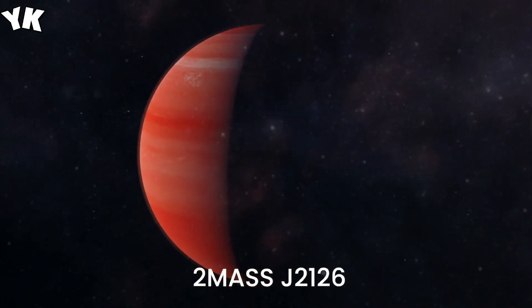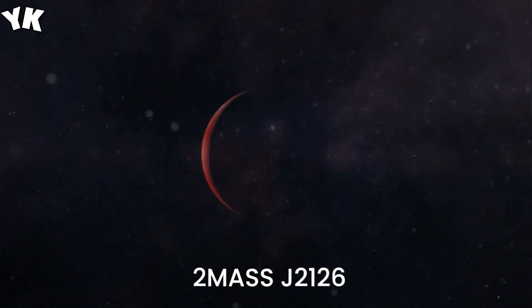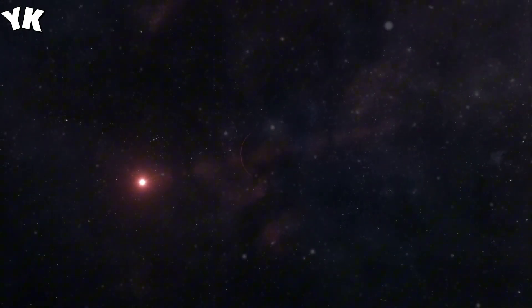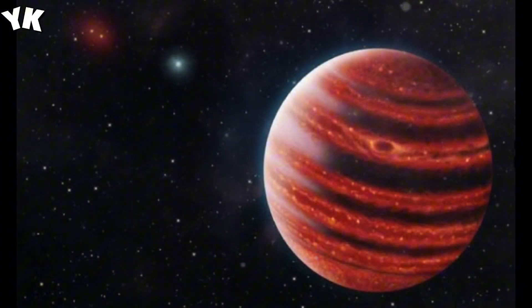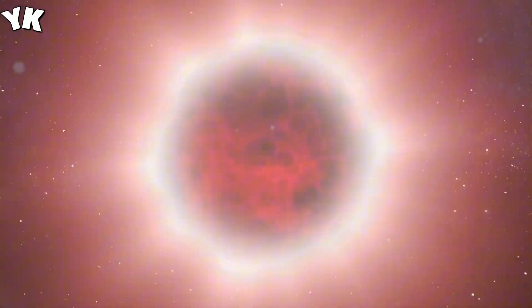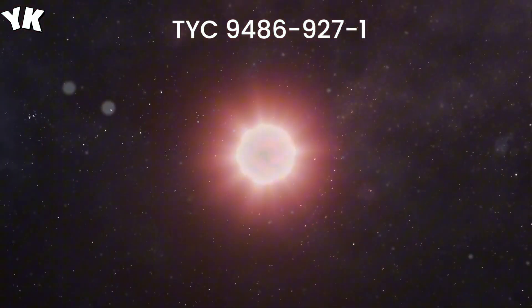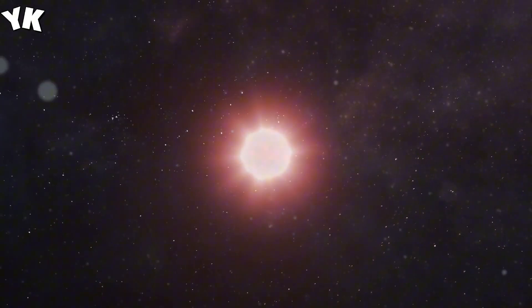2MASS J2126, the lonely wanderer. Meet 2MASS J2126, once thought to be a lonely planet, but actually part of a distant star system. Its enormous orbit takes around 900,000 Earth-years, making it one of the farthest reaches of space we've ever encountered.